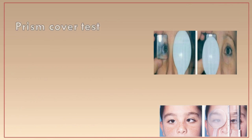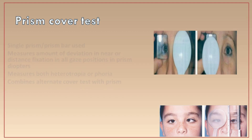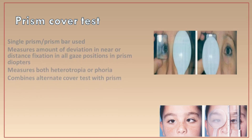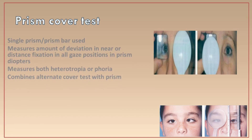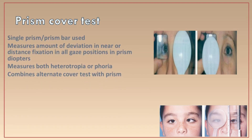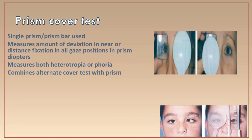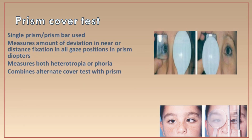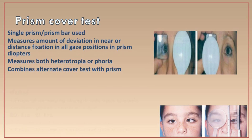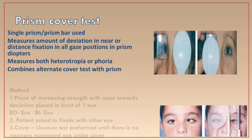In the prism cover test, either loose prisms or a prism bar can be used. The test is done at both 6 meters and 33 centimeters and measures both tropia and phoria. A prism of increasing strength with apex toward the deviation is placed in front of one eye — base out for esotropia and base in for exotropia — while the patient fixates with the other eye, and cover-uncover is performed until neutralization.